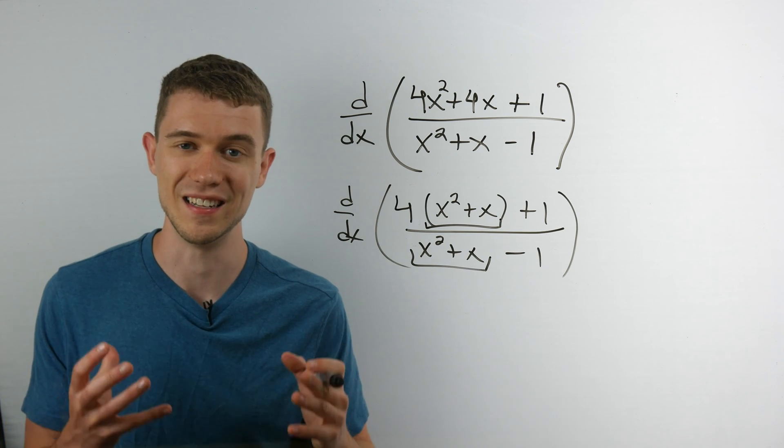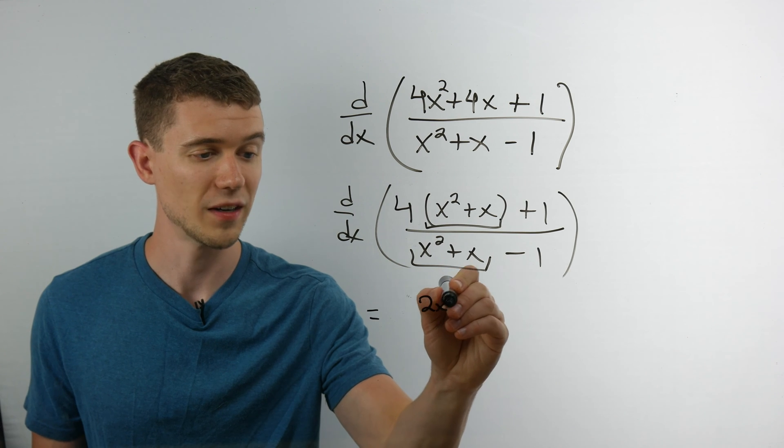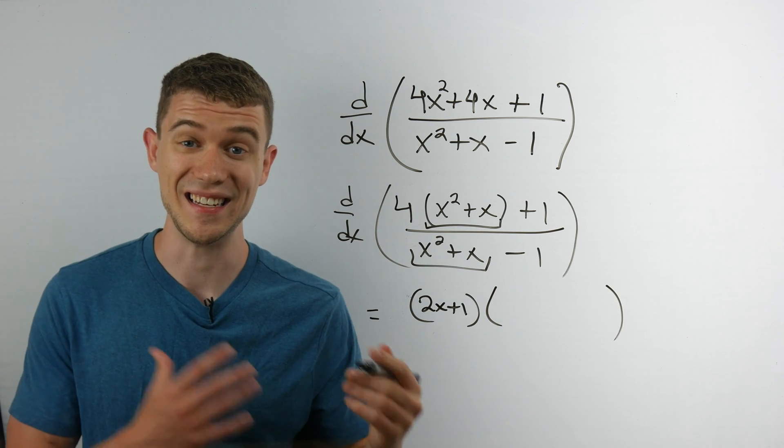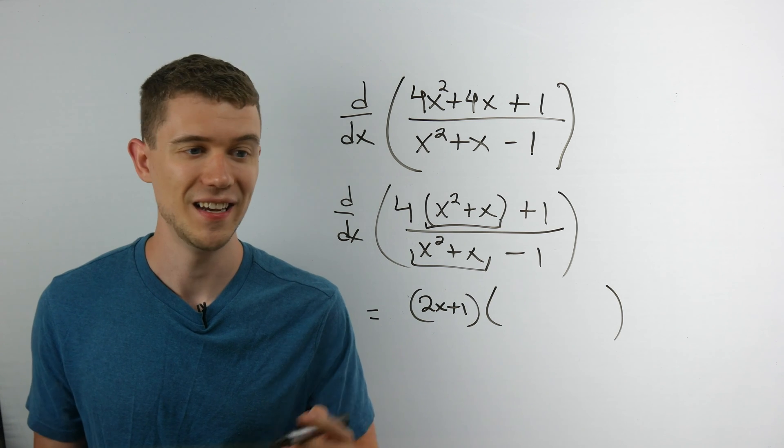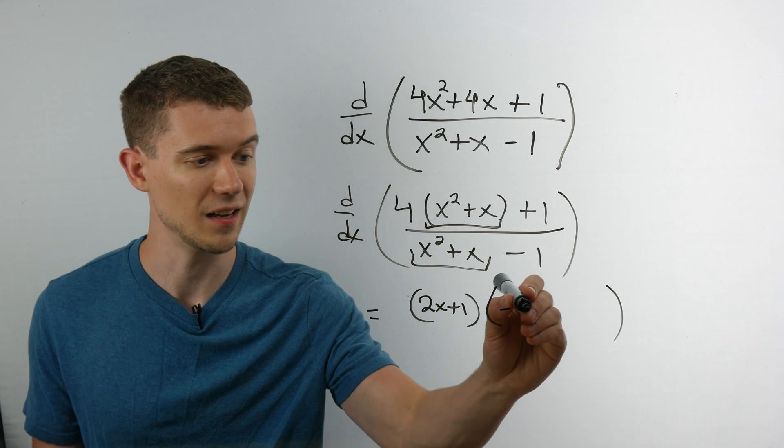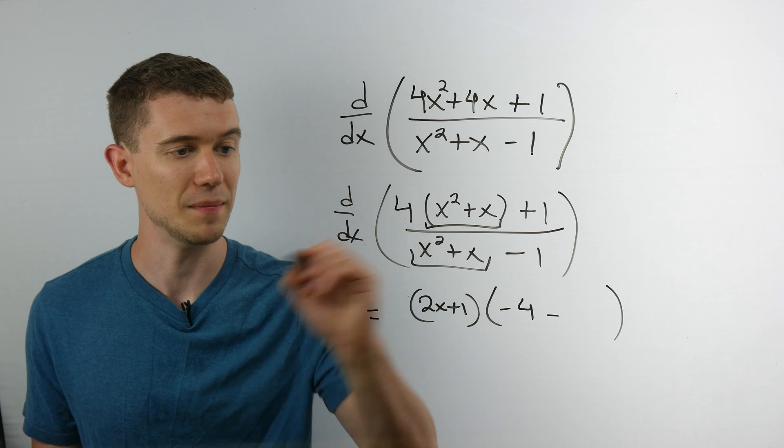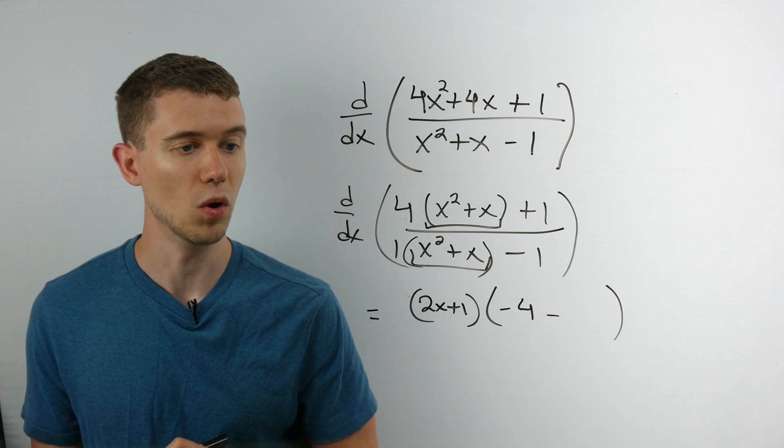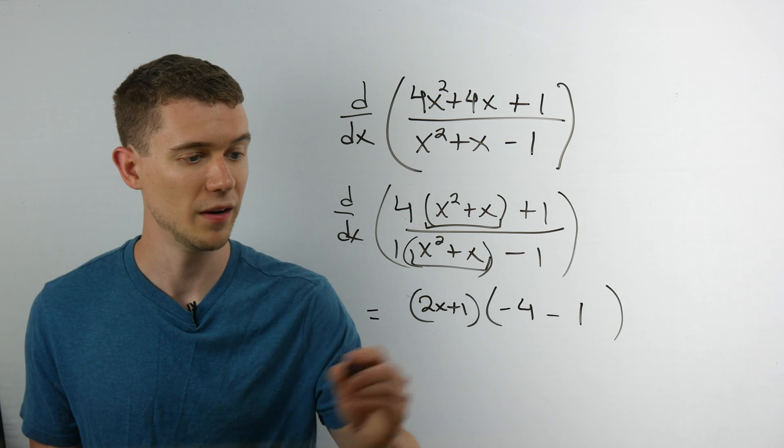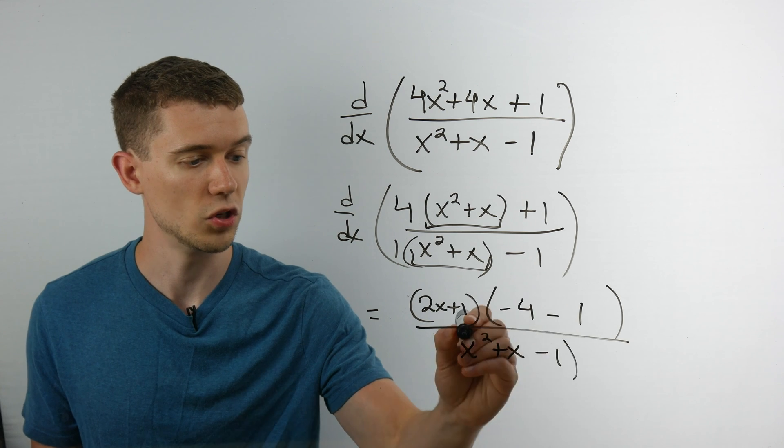So let's just plug this in to the formula trick. We take the derivative of this thing, that's just 2x plus 1, and then we times that by ad minus bc. In this case a times d, that's 4 times negative 1 is negative 4. And then it's minus b times c. In this case there's like an invisible 1 there. So b times c will simply be 1, all over the denominator squared, just like the quotient rule.